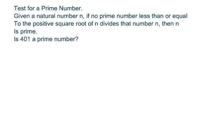Now, there's a theorem that we have that says that if you've got a natural number, like 401, if no prime number less than or equal to the positive square root of n, 401 in this case, divides that number, 401, then the number n, in this case 401, is prime.